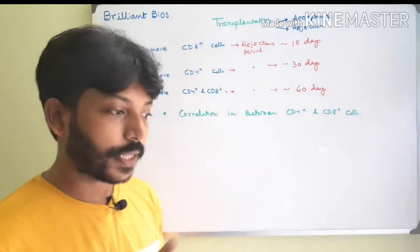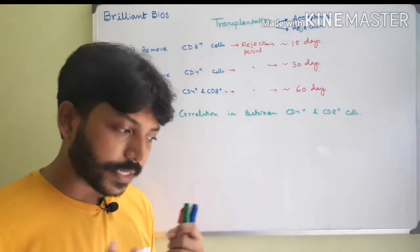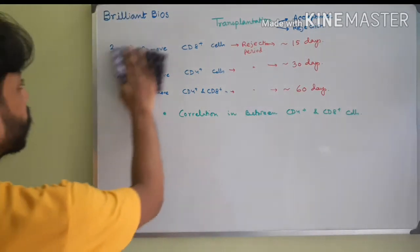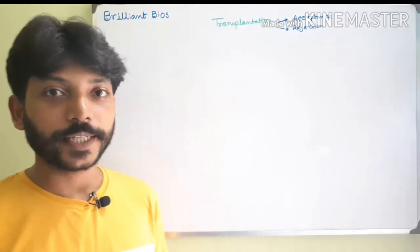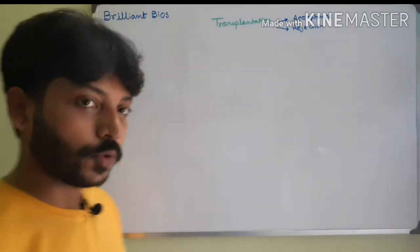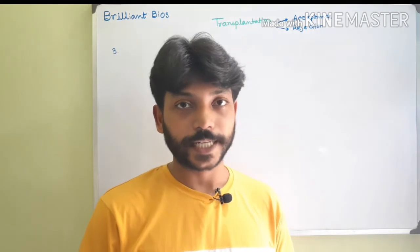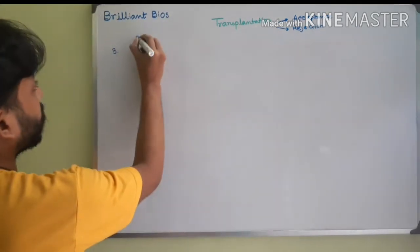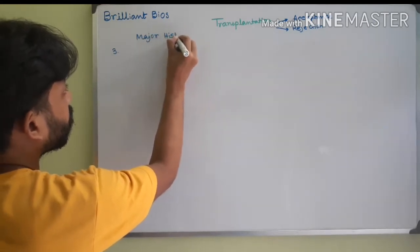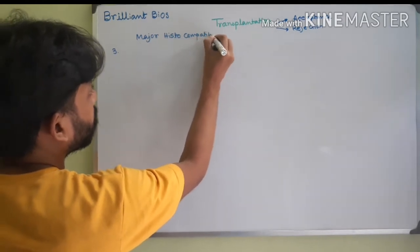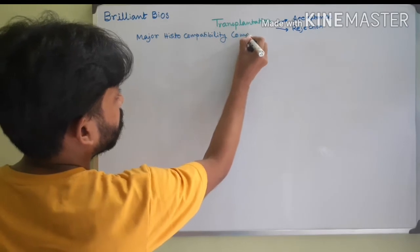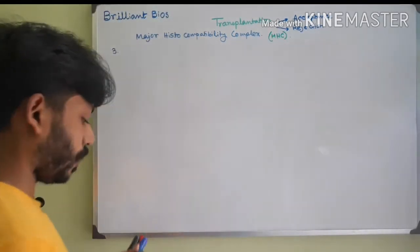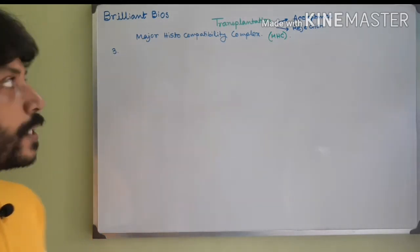Now I will show you the third experiment, by which scientists came to know about a very important molecule responsible for tissue transplantation rejection. They named this molecule Major Histocompatibility Complex, or MHC. The name implies: major means it has a major role, histo means tissue, compatibility means whether the recipient is compatible for the donor tissue, and complex means the molecule itself.